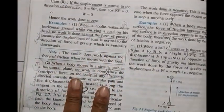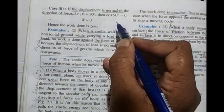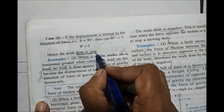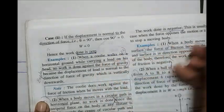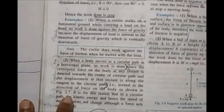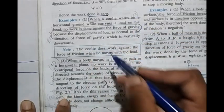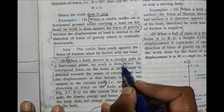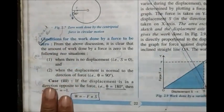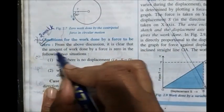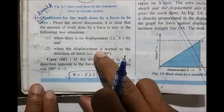Case 2: if displacement is normal to the direction of force, θ = 90°, cos90° = 0, so work done is 0. Examples: a coolie walking on horizontal ground carrying a load on his head — no work done against gravity; a body moving in a circular path in a horizontal plane — no work done. Important two-mark question: give two conditions for work done to be zero — no displacement, or displacement normal to force.